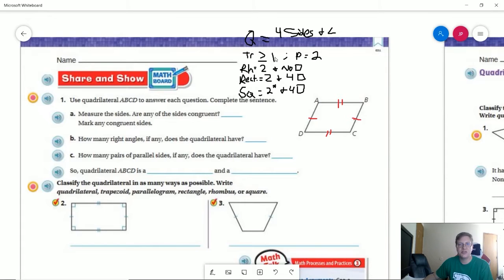A trapezoid is going to have at least one pair of parallel sides. And a parallelogram is always going to have two pairs of parallel sides. A rhombus is going to have two pairs of parallel sides, but they're all going to be the same length, which I forgot to put my little asterisk there for that. But no right angles.